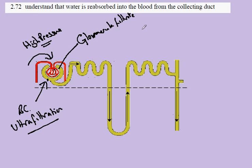And this glomerular filtrate contained, amongst other things, glucose, water, salts, and urea.